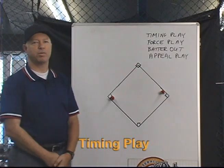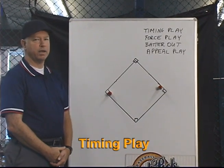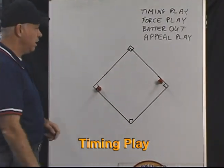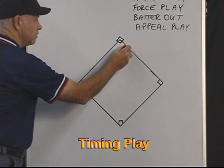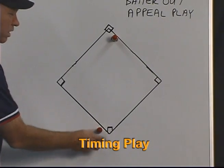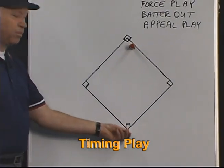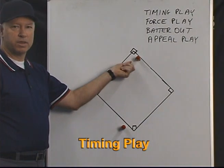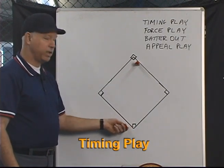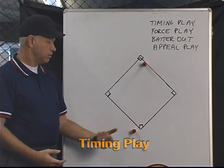In this first example it's going to be a simple case of a timing play where the run scores either before or after the actual out is made. If we look at the board, we have runners on first and third with two outs, and this runner is attempting to steal second base. The catcher throws down and as he throws down, this runner tries to score. This is a timing play because there's no force out involved — it's simply a case of whether this runner touches home plate before this runner is tagged out, then the run would count. If the runner is tagged out before this runner touches the plate, then his run doesn't count. Very simple example of a timing play: which happened first, the out or the score?